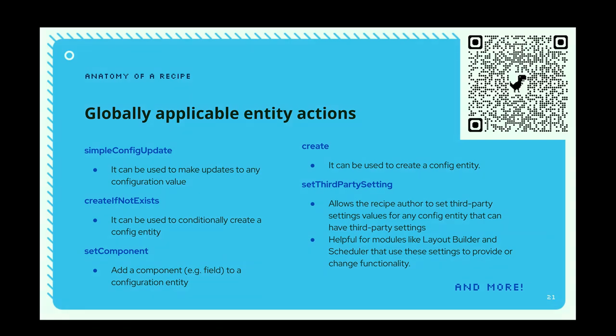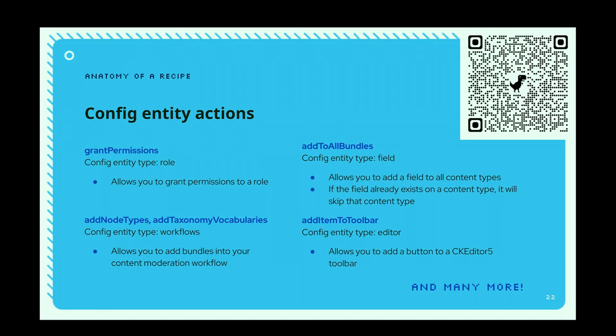Let's talk about some of the globally available config actions. There's a simple config update to basically set a value. 'Create if not exists' is a good one for providing some configuration — if a site already has configuration, it says let's just leave it and not create an error. You can 'set component' to add something like a field to an existing content type or a form. And then things like 'create' or 'third party settings' are ways to add to the site in more nuanced ways. There's a QR code on the slide and I'll also have the slides available at the end.